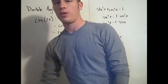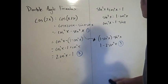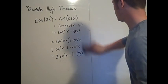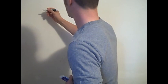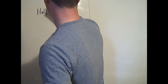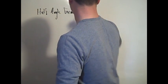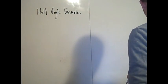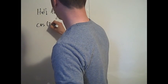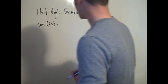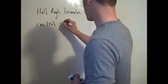Now that we know the double angle formulas, we can get the half angle formulas. For the half angle formulas, let's start with cosine 2x equals 2 cosine squared x minus 1, which we just showed.